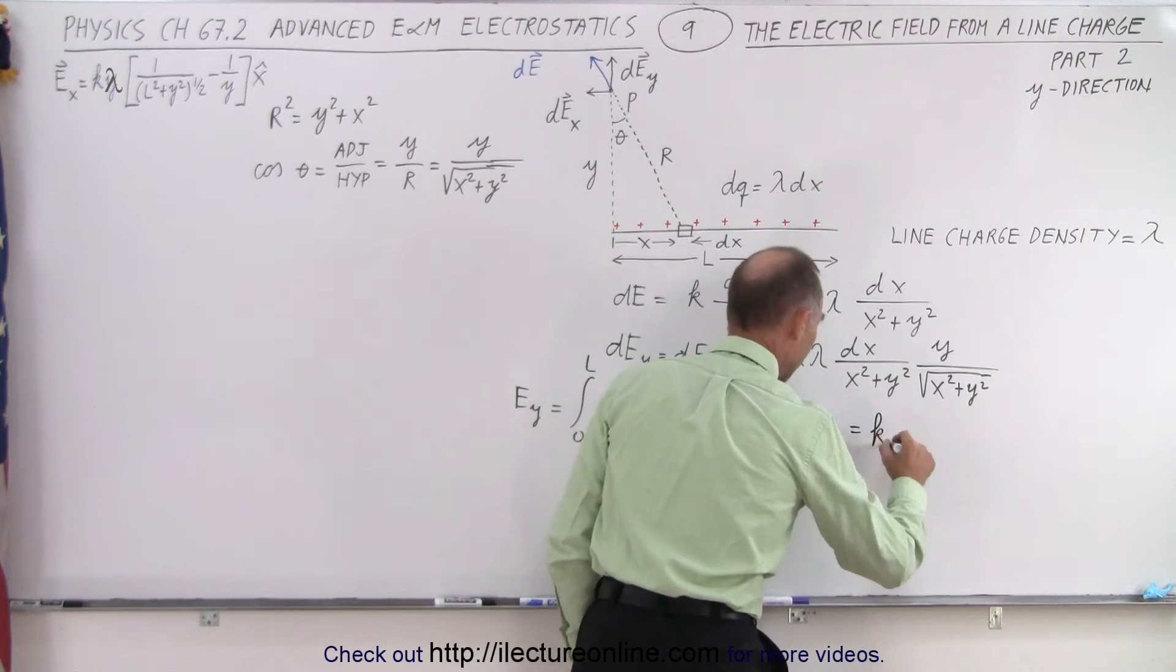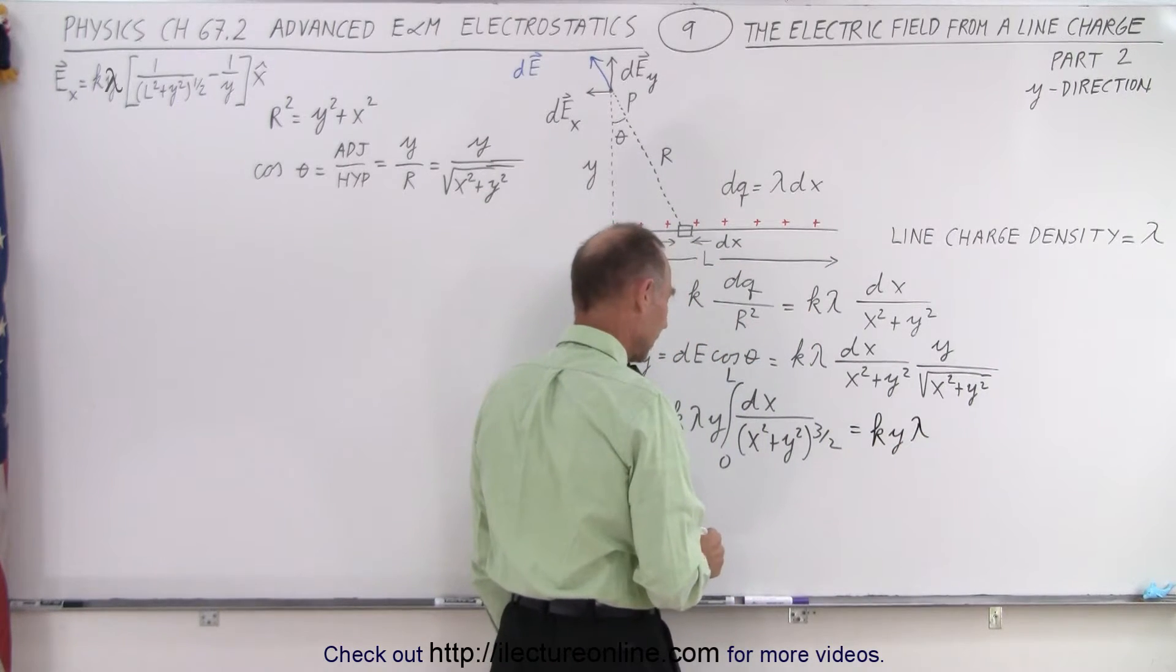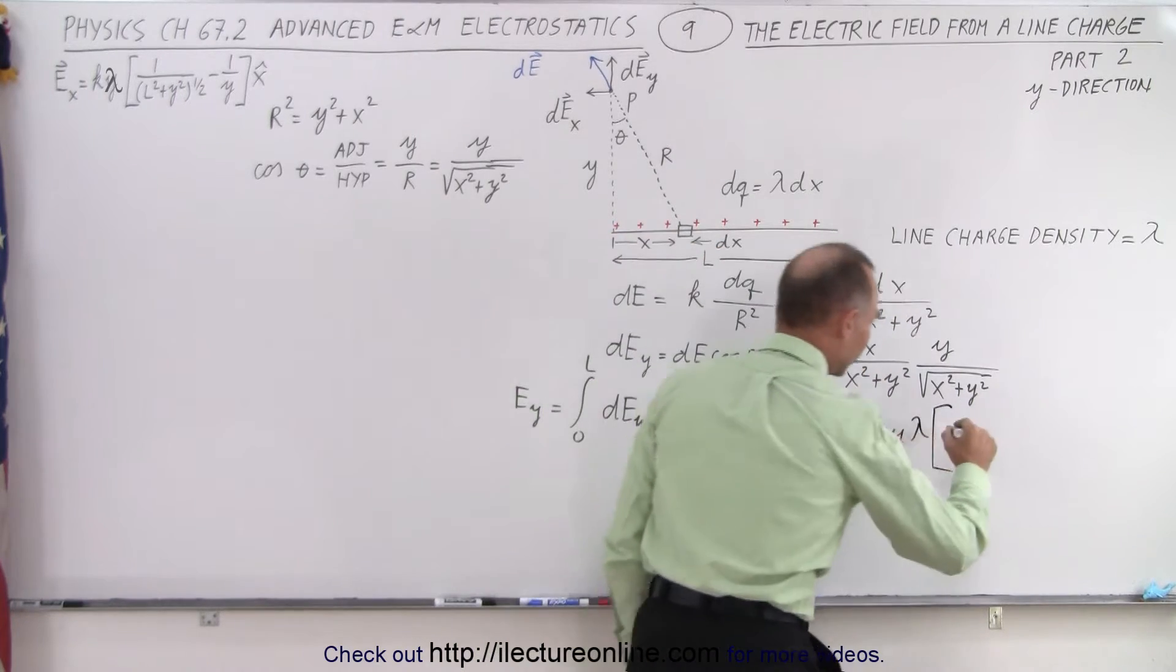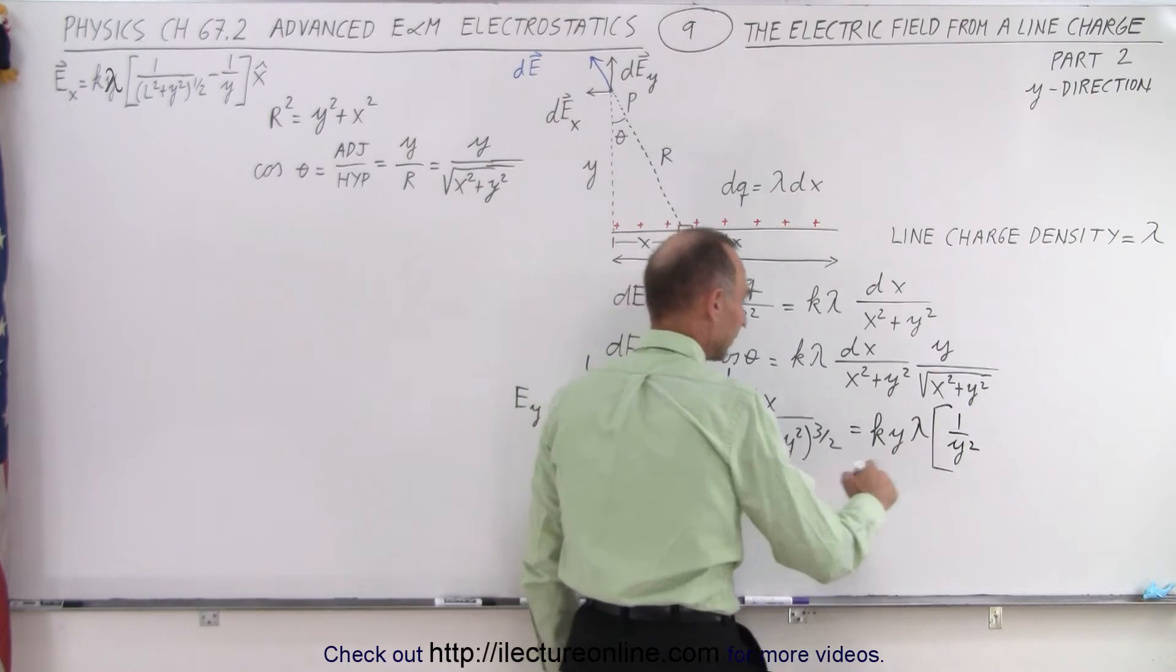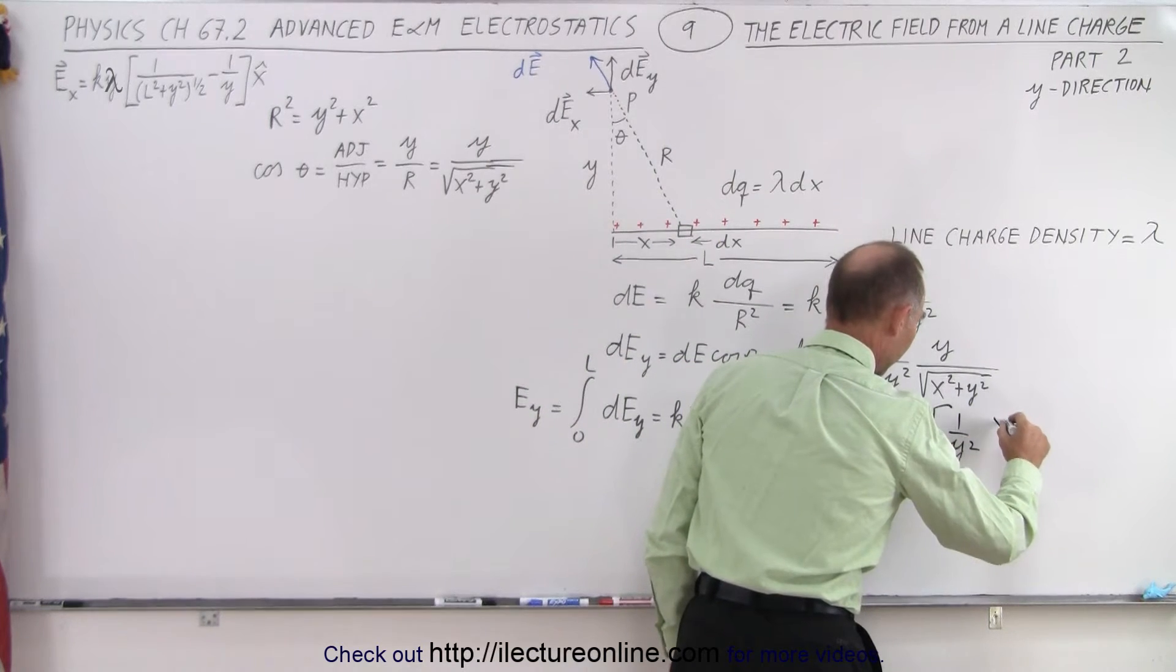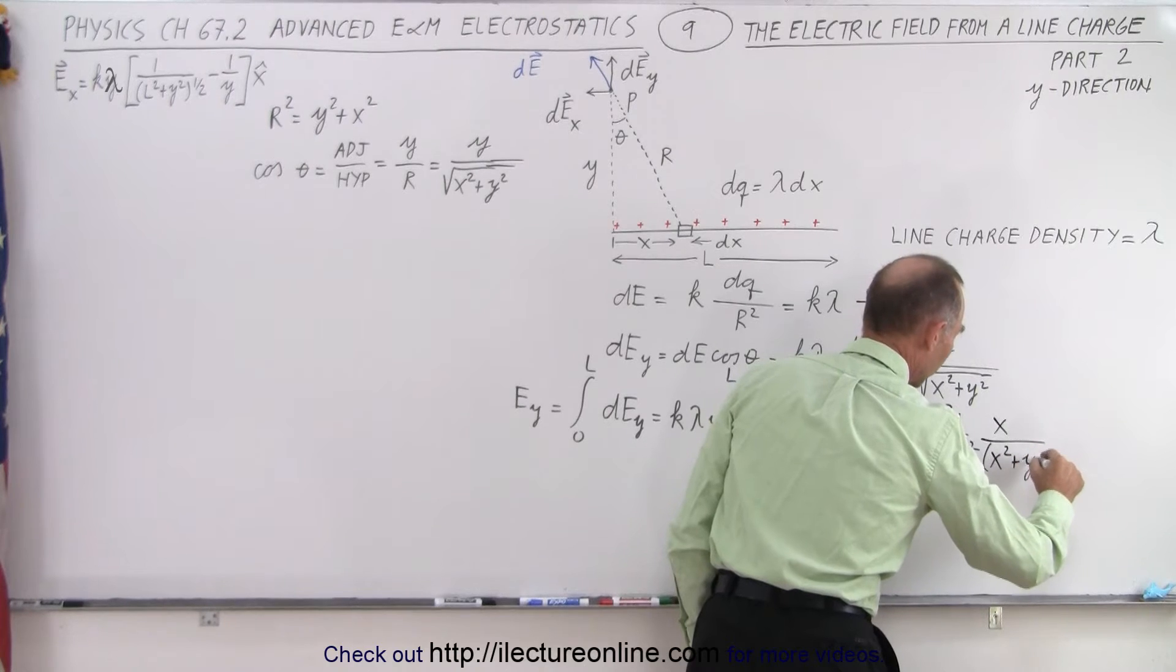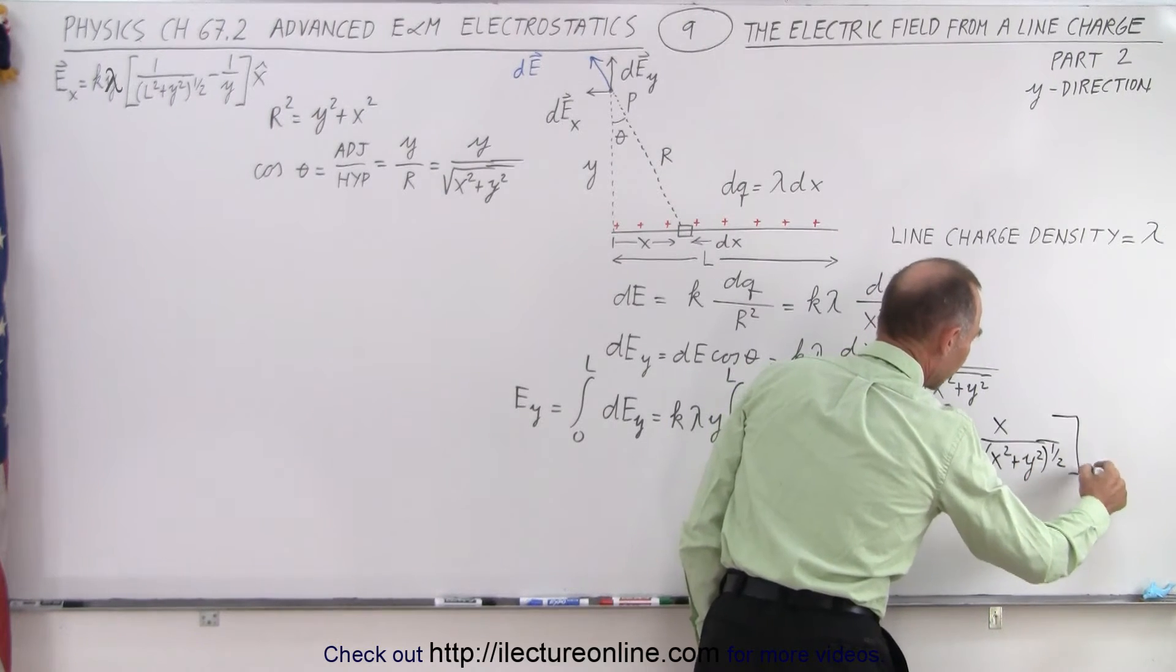This is equal to k y lambda, I guess I reversed them in order, it doesn't matter, times here we get 1 over y squared, 1 over the constant squared, times the variable, in this case x in the numerator, divided by the quantity x squared plus y squared to the 1 half power, and evaluated from 0 to L.